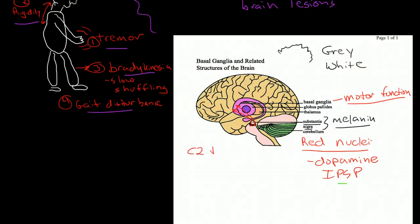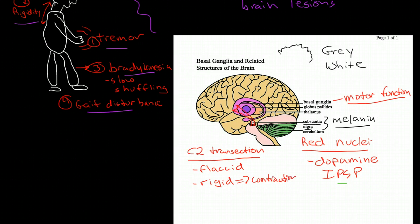You can see this in patients that have spinal injuries. If you have like a C2 transection of the spine, initially patients with a spinal injury will be flaccid, they'll have no muscle movement at all, but after a couple of weeks they will become very rigid and they'll start to get contractures.